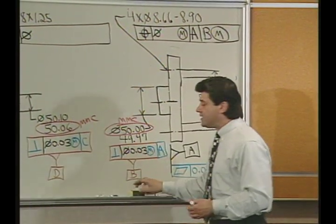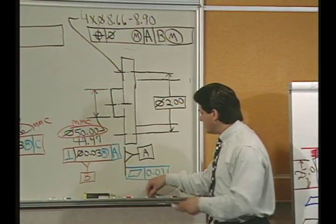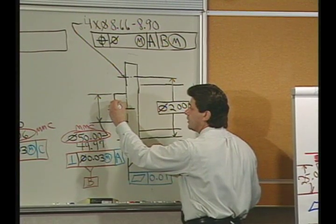What it says is, as B gets smaller, and I'm going to show B being smaller here. Here's B getting smaller.